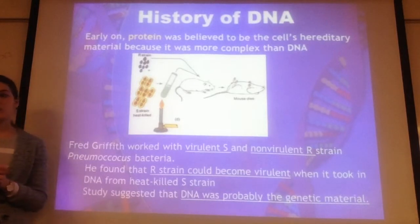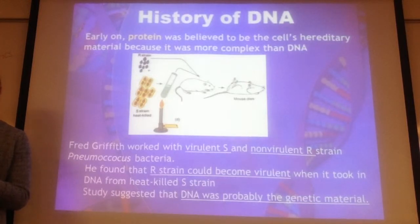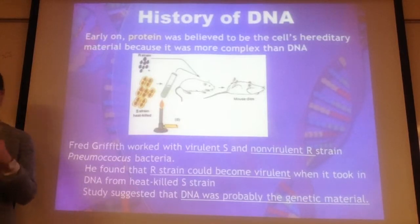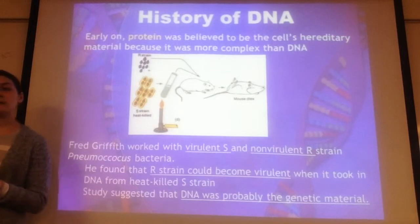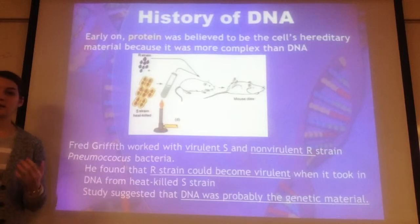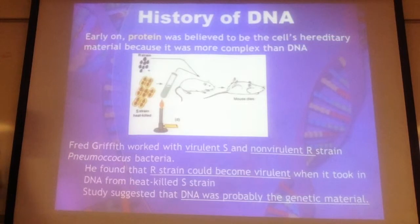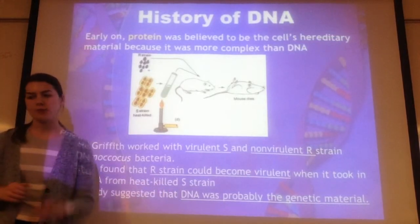This is important because early on, people thought that protein could be the genetic material, since there's a lot more protein in our bodies, many different types of proteins folded in special ways. So people started doing experiments to figure out: is it protein or is it DNA that's making us who we are? Griffith's experiments told us it's probably DNA, probably not proteins.